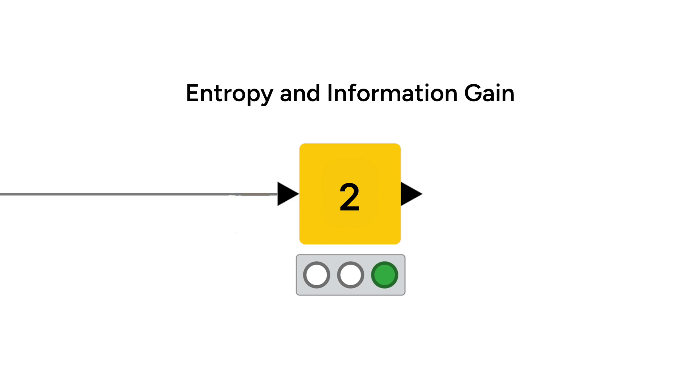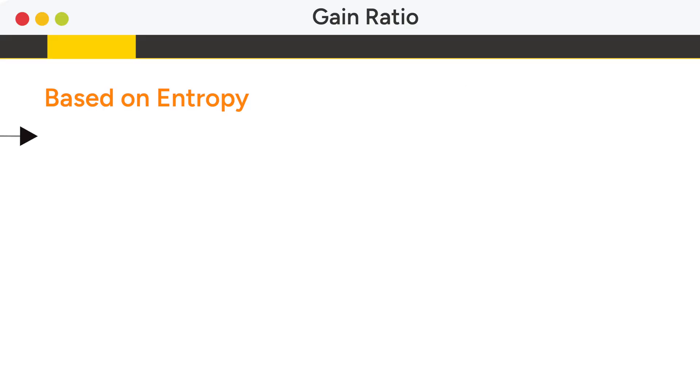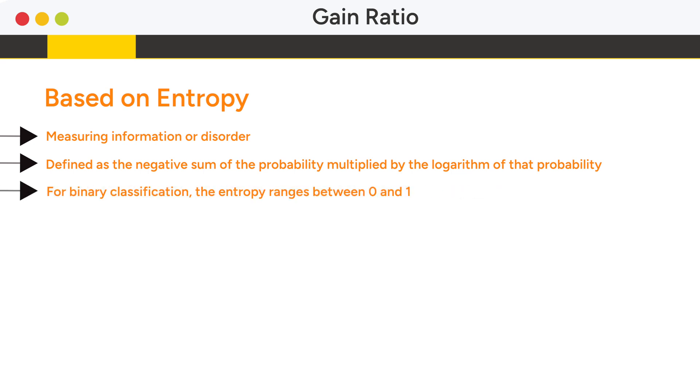The gain ratio is based on entropy, a concept used to measure information or disorder. Entropy is defined as the negative sum of the probability for each class multiplied by the logarithm of that probability. For binary classification, the entropy ranges between zero and one.